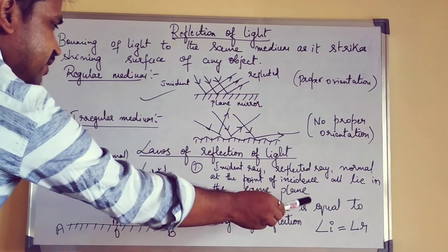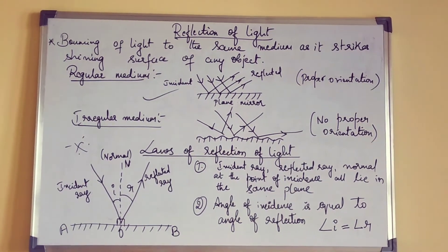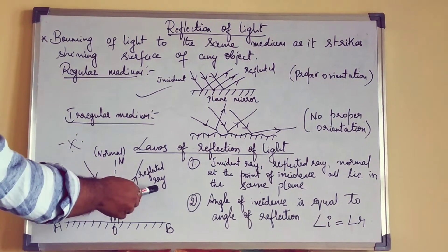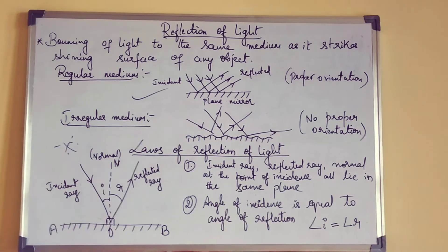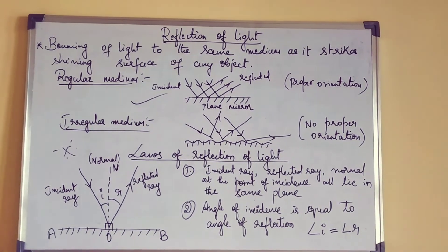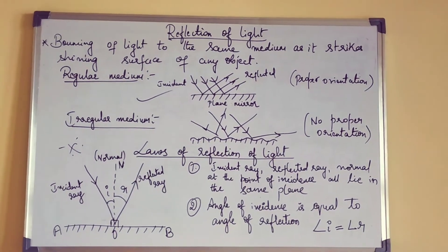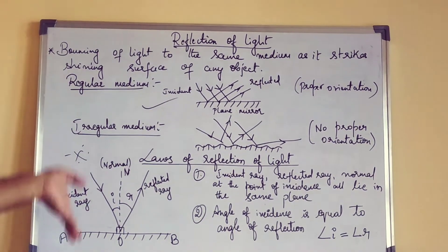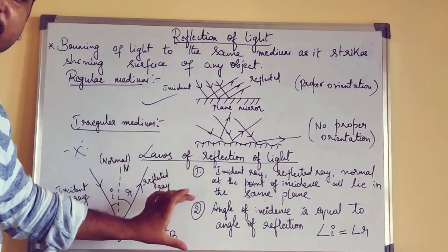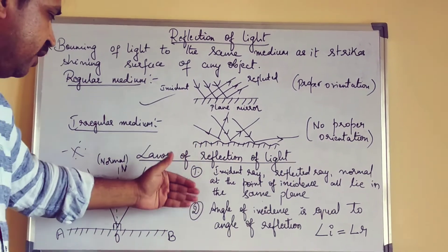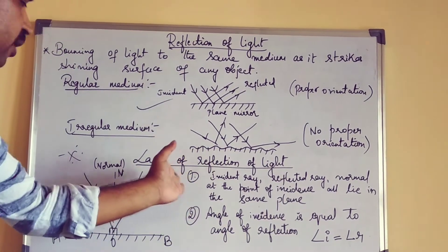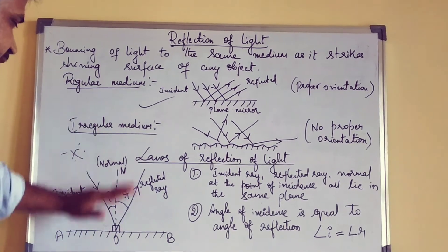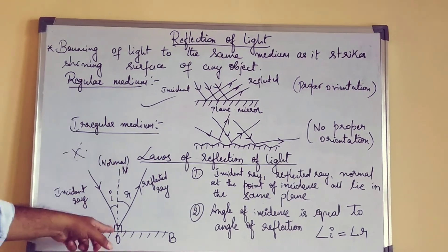The second law: the angle of incidence is equal to the angle of reflection. Whatever angle the incident ray makes with the normal — that is I — and whatever angle the reflected ray makes with the normal — that is R — both angles should be equal. This is the second law. Now, the second law will come only when the first law is satisfied. Whenever they are not in the same plane, you cannot apply the second law. So first law: incident ray, reflected ray, and normal at the point of incidence all lie in the same plane. Then you can expect the angle of incidence to be equal to the angle of reflection.